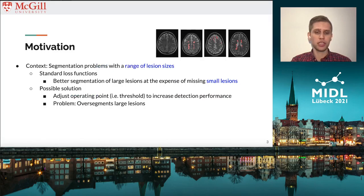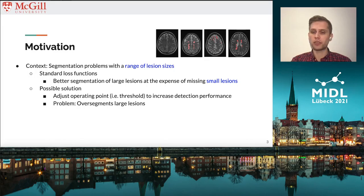When dealing with segmentation problems that involve a range of lesion sizes, standard loss functions typically better segment large lesions at the expense of missing small ones. It is possible to adjust the operating point to increase small lesion detection performance, but this comes at the cost of over-segmenting large lesions.